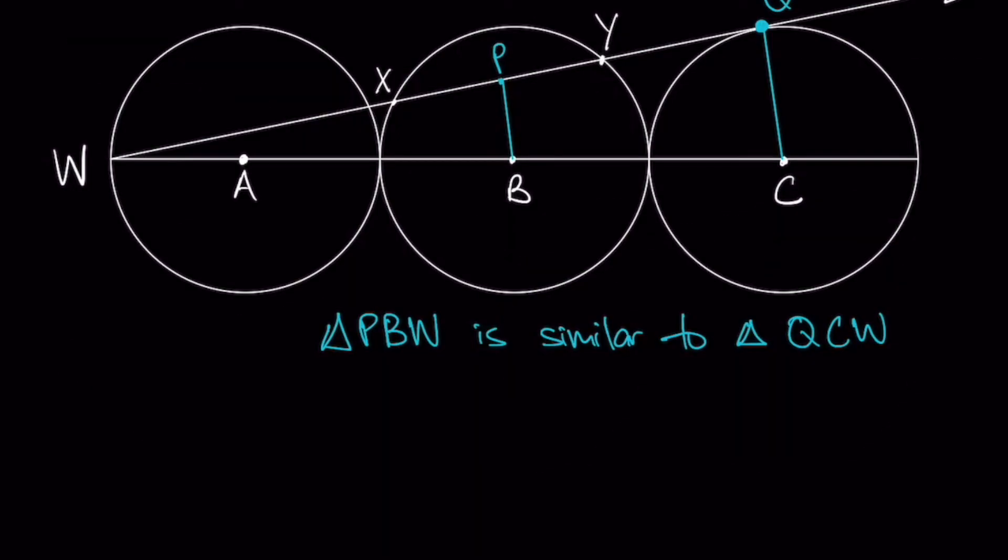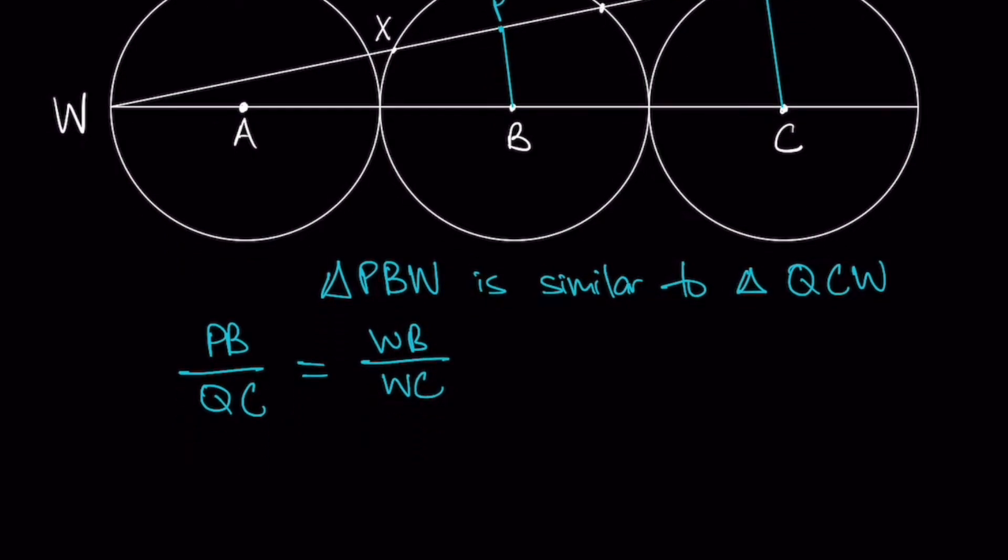Triangle PBW is similar to triangle QCW. Therefore, making use of similar triangles, we can have PB over QC equals to WB over WC, which is the radius of the third circle, 20, equals to WB, which is equals to 3 radiuses, which is 60, over WC, which is 5 radiuses, 100.